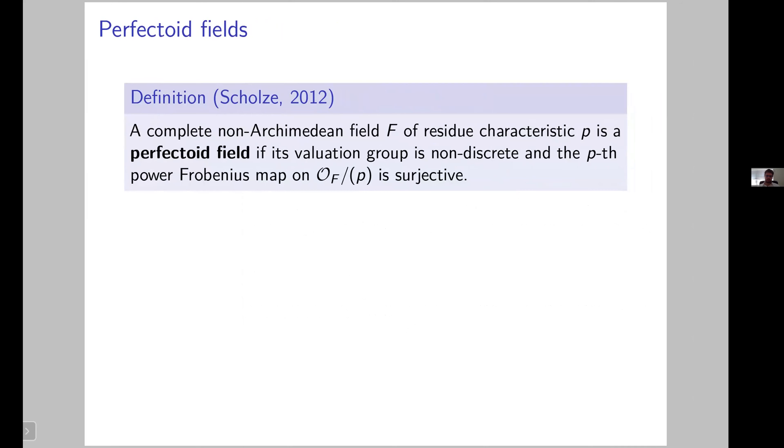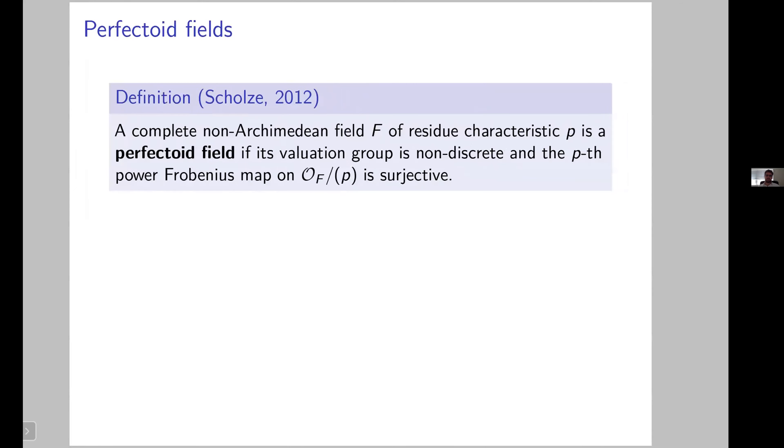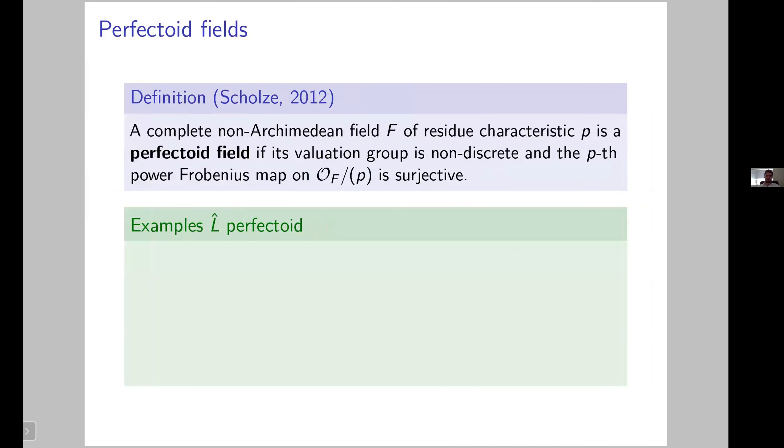I would like to recall what this result is about. Of course I need to talk maybe a bit about perfectoid fields. Perfectoid fields were introduced by Peter Scholze in 2012. A perfectoid field is a complete non-archimedean field of residue characteristic p, whose valuation group is non-discrete and such that the p-power Frobenius map on the ring of integers modulo p is surjective. It's a bit technical definition, but let me give some examples in situations where the completion of L is a perfectoid field.